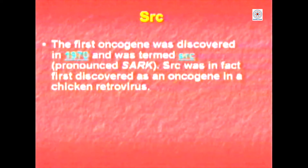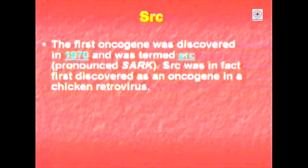Now let us look at another protein which is a protein tyrosine kinase. What does it do? It will phosphorylate another protein thereby activating it. For example, the first oncogene that was discovered in 1970 was called Src — S-R-C but pronounced as 'Sark'. This was first discovered as an oncogene in a chicken retrovirus.